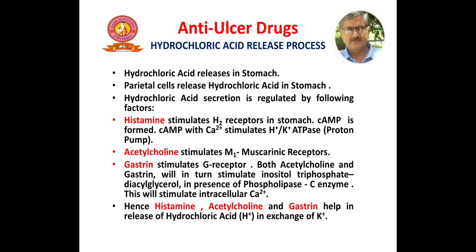The first factor is histamine. Histamine stimulates H2 receptors, which increases cyclic AMP levels. The elevated cyclic AMP levels stimulate calcium levels, which then act on the proton pump, that is the hydrogen-potassium ATPase. Besides histamine, acetylcholine and gastrin are the two other factors. Acetylcholine stimulates M1 muscarinic receptors, whereas gastrin stimulates G receptors. Both acetylcholine and gastrin stimulate inositol triphosphate and diacylglycerol in the presence of enzyme phospholipase C, which will combinedly stimulate intracellular calcium and acid will be released.